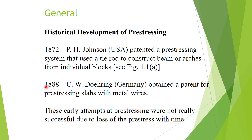In 1888, C.W. Dorring from Germany obtained a patent for pre-stressing slabs with metal wires. These early attempts at pre-stressing were not really successful due to loss of pre-stress with time. Like a rubber band, the steel tension decreases over time. Because of the lack of high strength materials at that time, the stresses would lose their value with time and were not very effective.